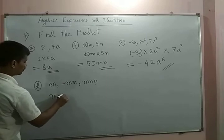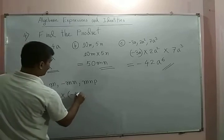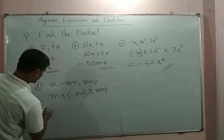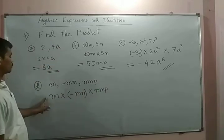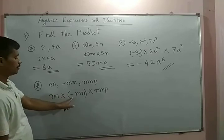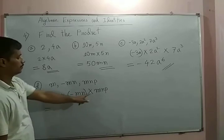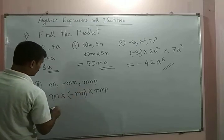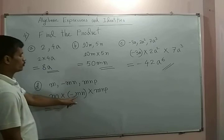Last one: m into minus m into mn and p. This m is positive, this m is negative, this one is negative, this one is positive. So plus minus is minus, minus minus is plus, minus. M into m is m square.